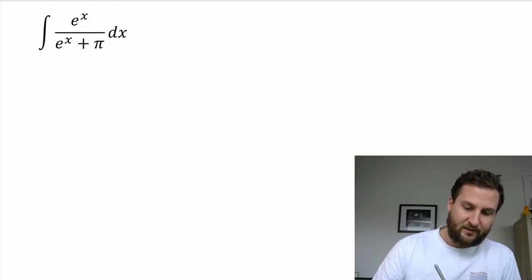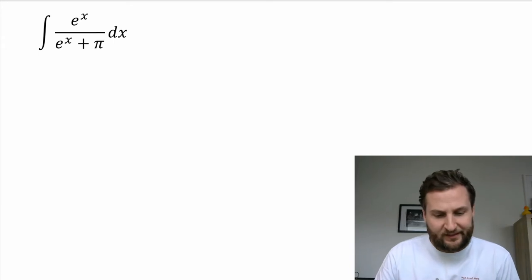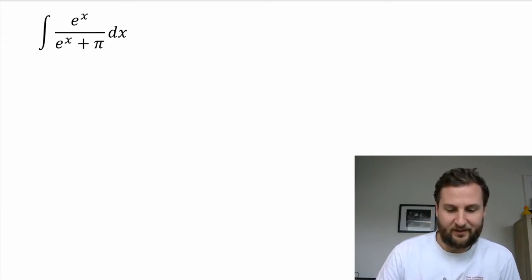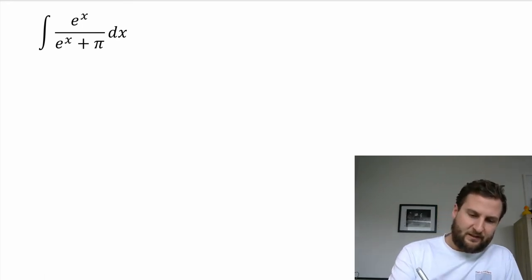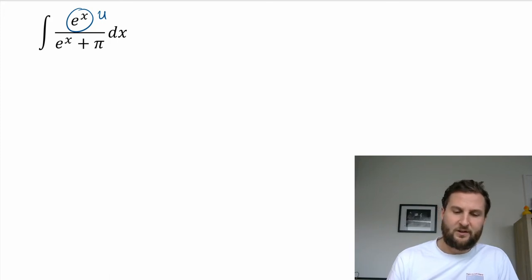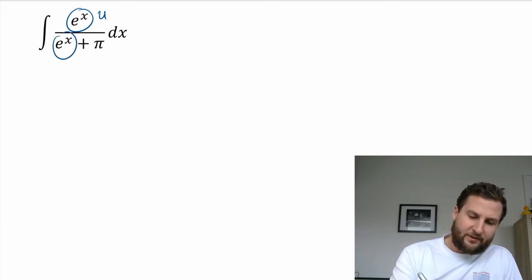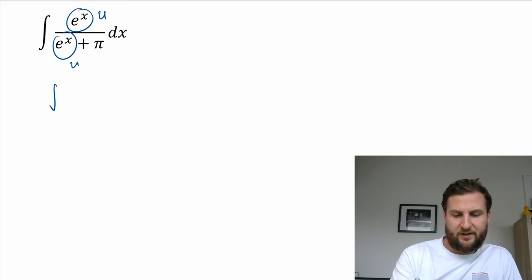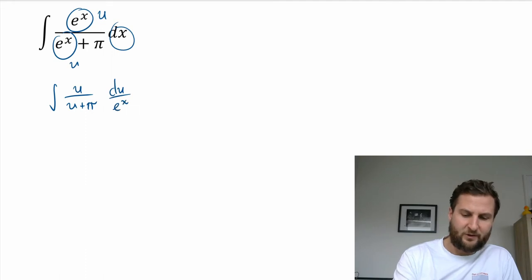So we need to think of another way around this. So we could replace e to the x - let's say e to the x is replaced with u. But then do we also replace this e to the x with u and then I have an integral of u over u plus pi? I would replace my dx and I would end up with a du over e to the x, and then I'm still kind of stuck with this e to the x. So that doesn't seem to be any good.